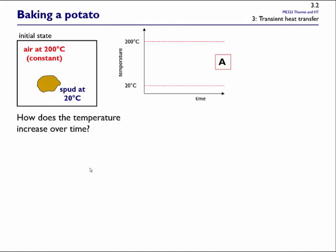You put a potato into an oven. The potato is at 20°C initially, the air in the oven is at 200°C, and the air temperature is controlled so it stays at a constant 200°C, and the potato is going to get hotter as time goes by. If we plot temperature of the potato as a function of time, we know it starts at 20°C and ends up at 200°C if we wait long enough — but what happens in between?